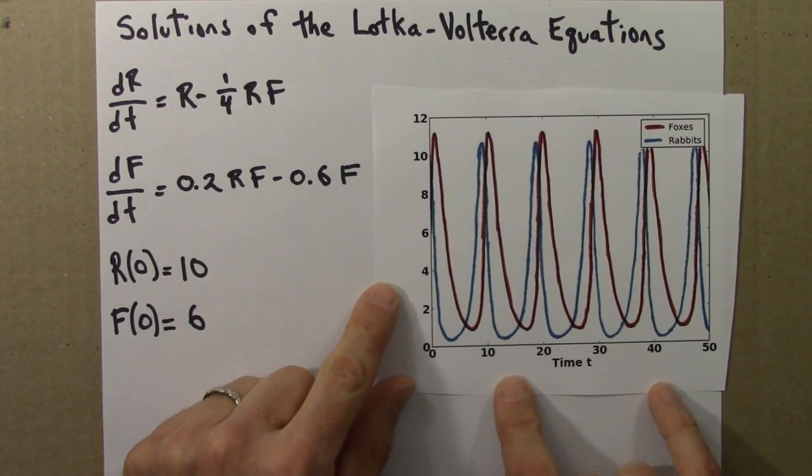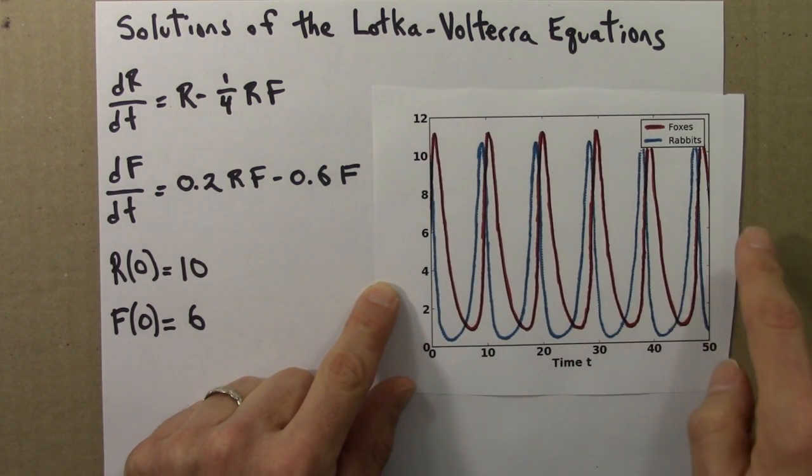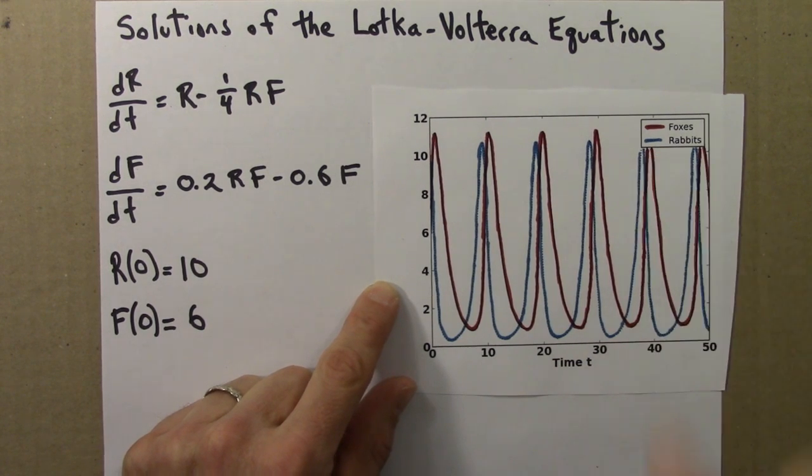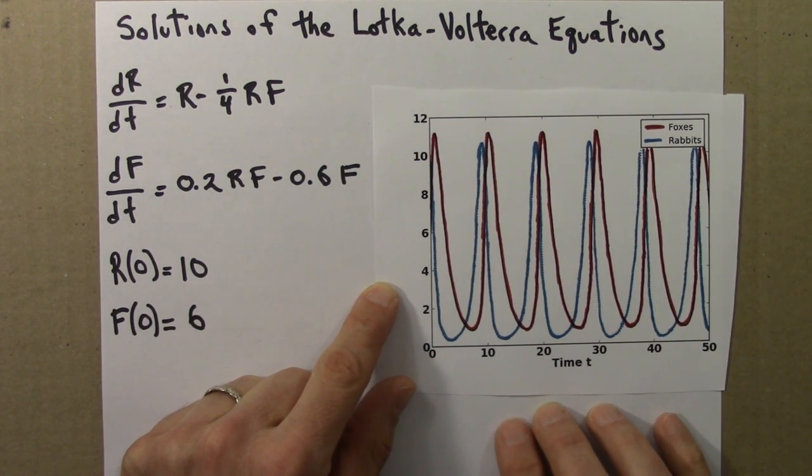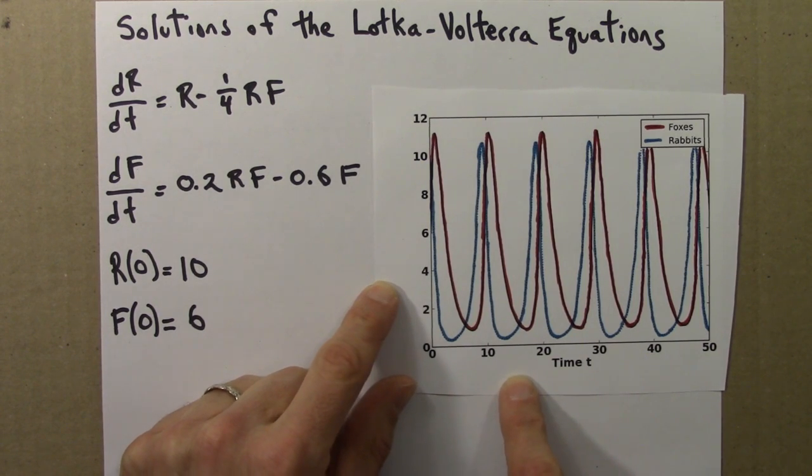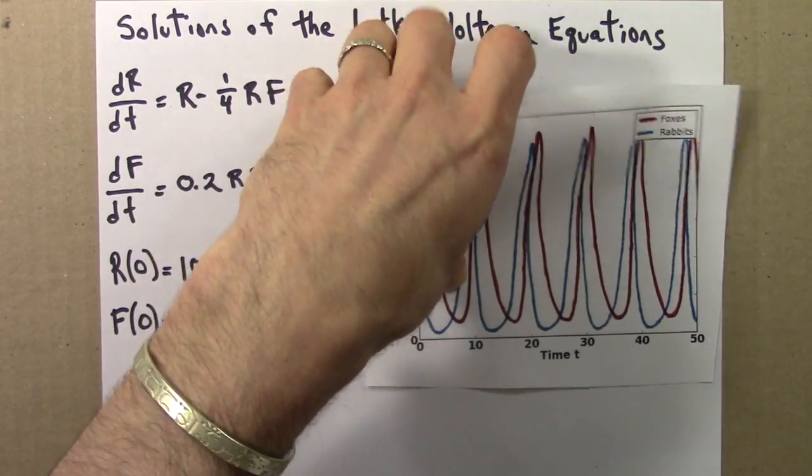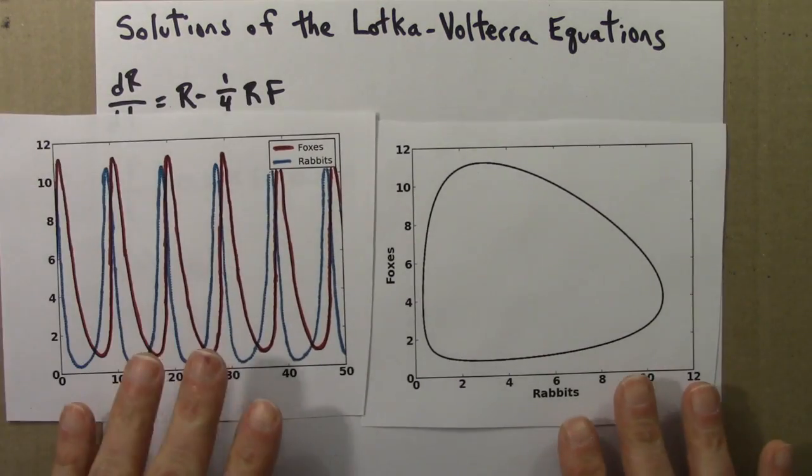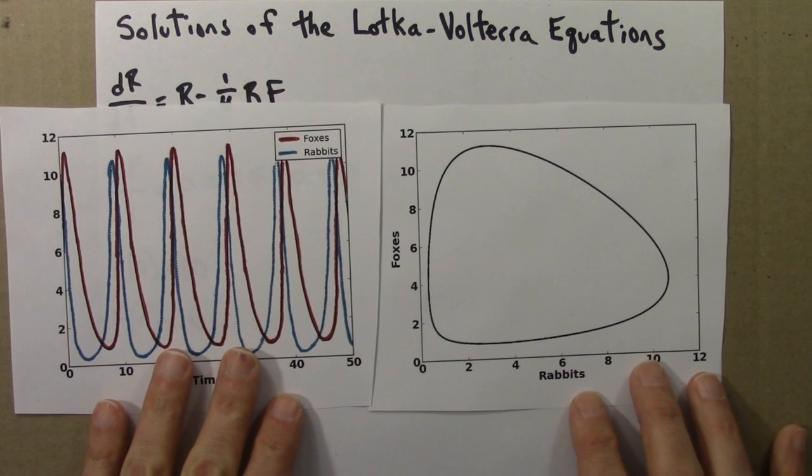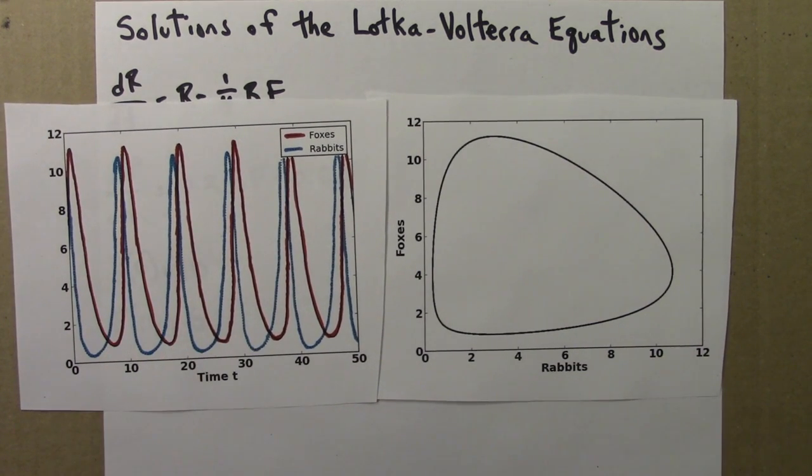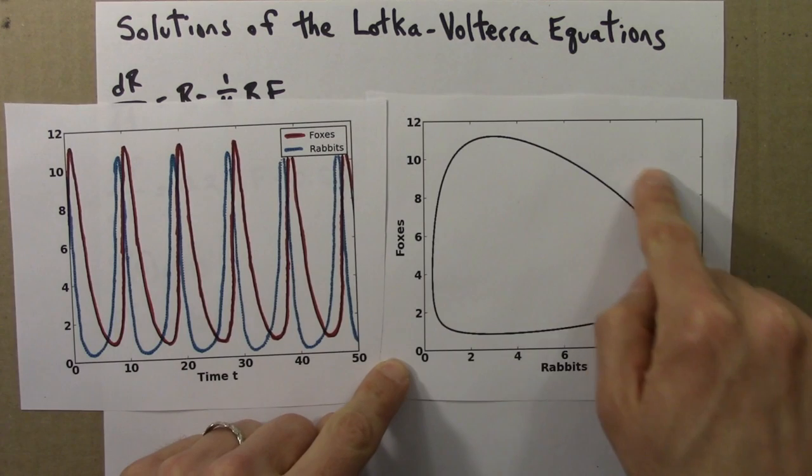So what I'm going to do is take the rabbit population and plot them against the fox population. So I'm going to remove time, just like we did when we made the one-dimensional phase lines. So let me show you what this would look like for this solution. If I plot the red curve against the blue curve, I end up with this cycle.